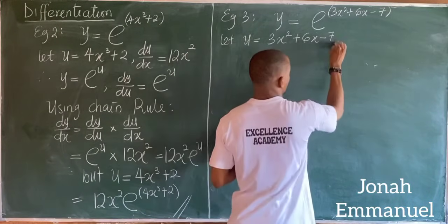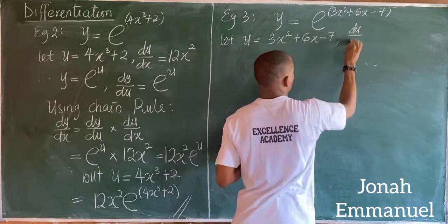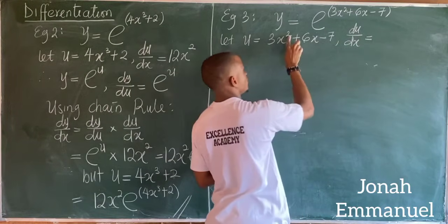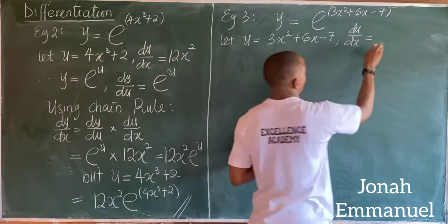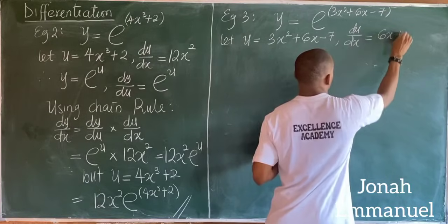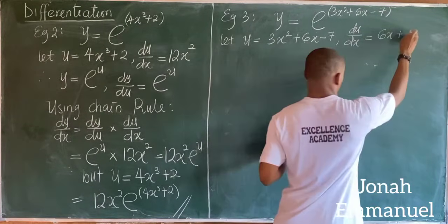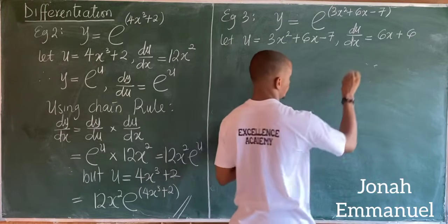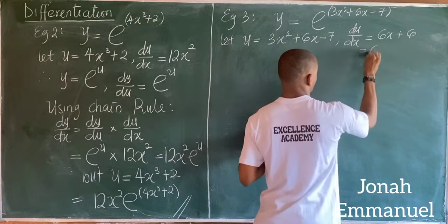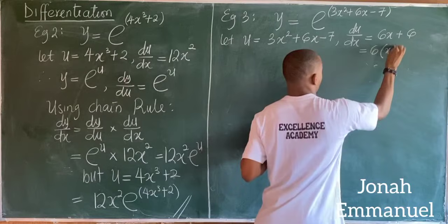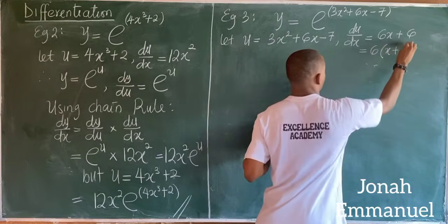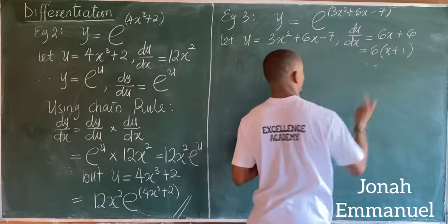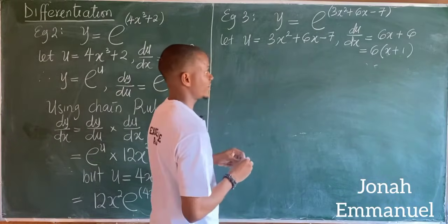Next up, I'll differentiate this such that du over dx is equal to 6x plus 6. If you want to, you could factorize this to give you 6 into x plus 1, since 6 times x is 6x and 6 times 1 is 6. So that's my du over dx.